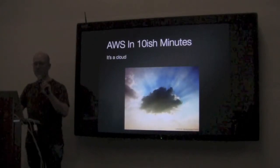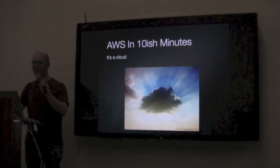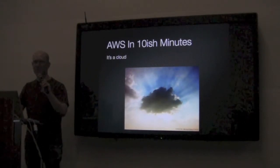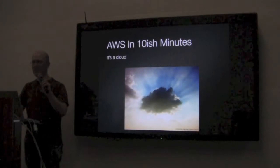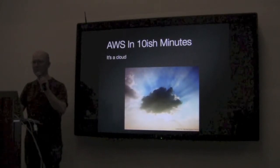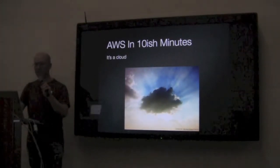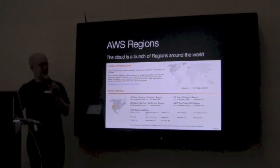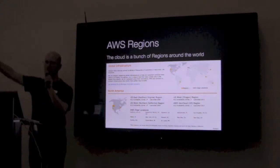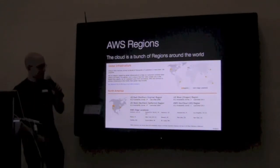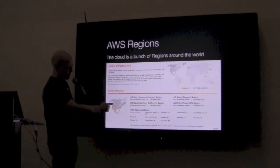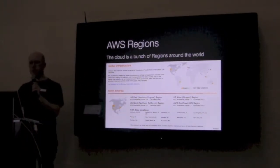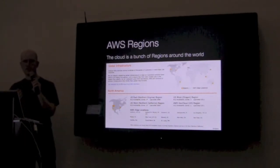AWS in about 10 minutes. Amazon Web Services is a cloud. We've all heard about clouds — there are commercials about clouds that have nothing to do with computing. This cloud is a bunch of what are called regions around the world. This is a map, and these yellow dots — there's four in the United States, one in South America — these are the locations where Amazon Web Services has a presence.